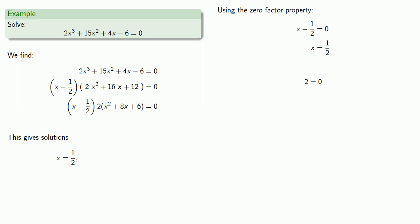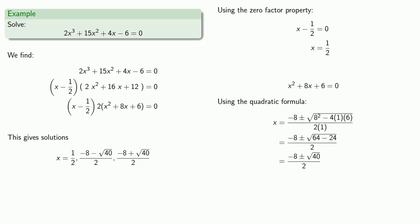2 equals 0. Well, that doesn't happen, so we could ignore this case. Or x squared plus 8x plus 6 is equal to 0. So we'll run this through the quadratic formula and get a couple more solutions.